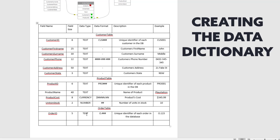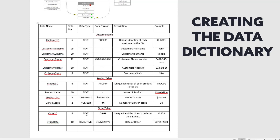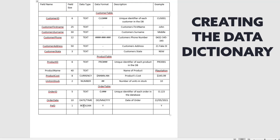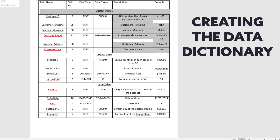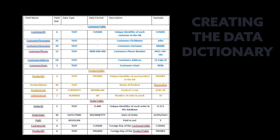Once you have all those fields listed, you then have to go and list other important elements like the field size, the data type, the data format, and the description. For example, for the customer ID the example is CUS001, so the field size is going to be 6, the data type is text because it's a mixture of numbers and letters, and the data format is CUS000. You can see some other data format examples for phone number where it's got a bunch of hashes then a dash, etc.